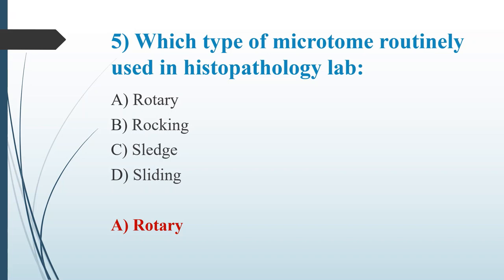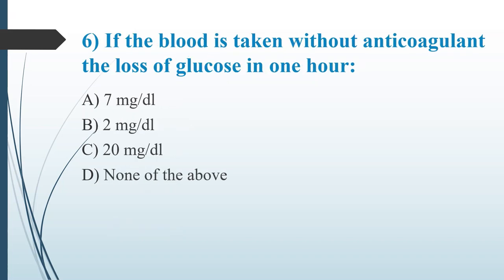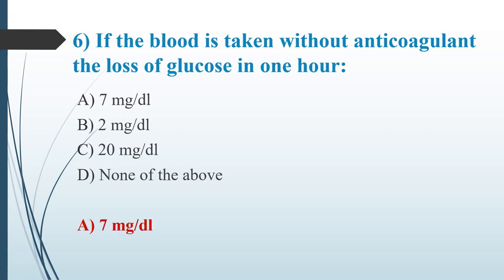Sixth question: If blood is taken without anticoagulant, what is the loss of glucose in one hour? Option A: 7 mg/dL. Option B: 2 mg/dL. Option C: 20 mg/dL. Option D: None of the above. The answer is Option A, 7 mg/dL. Glucose undergoes glycolysis, so the grey top bottle is commonly used for detection of glucose — it contains sodium fluoride and potassium oxalate as anticoagulant, which inhibit the enzyme enolase.